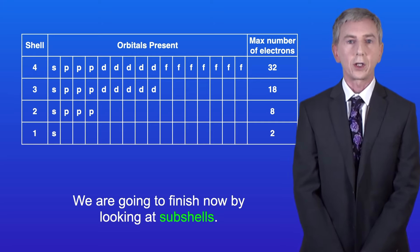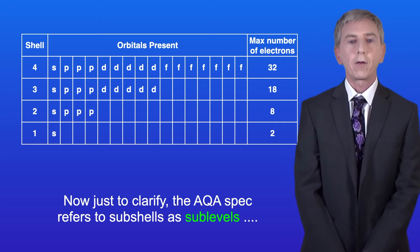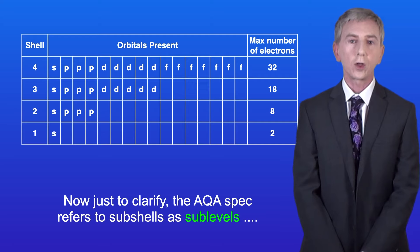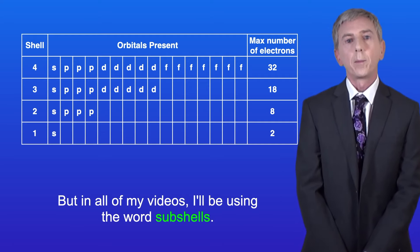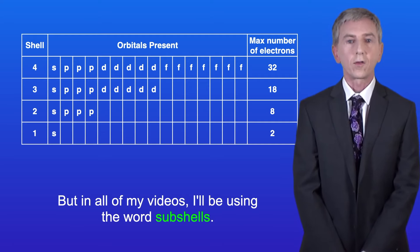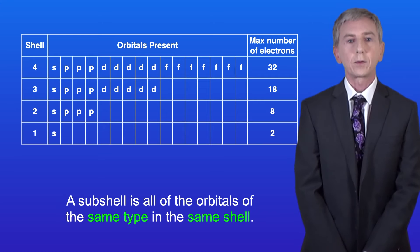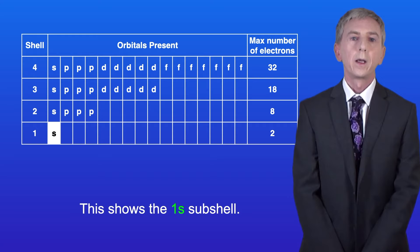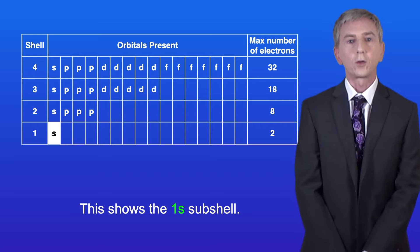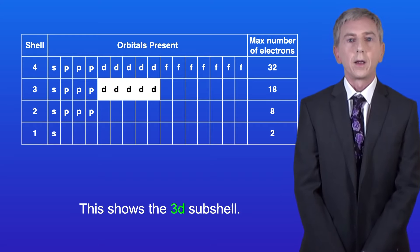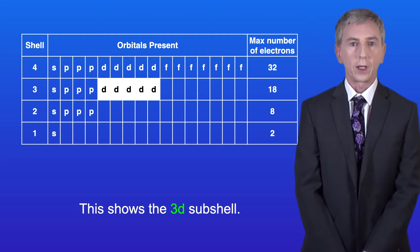We're going to finish now by looking at sub-shells. Now just to clarify, the AQA spec refers to sub-shells as sub-levels, but in all of my videos I'll be using the word sub-shells. A sub-shell is all of the orbitals of the same type in the same shell. So this shows the 1s sub-shell, this shows the 2p sub-shell, and this shows the 3d sub-shell.